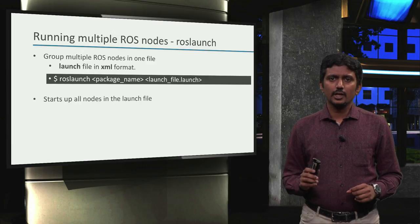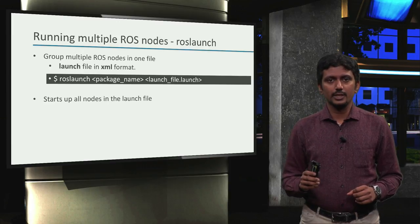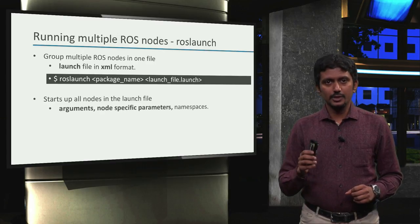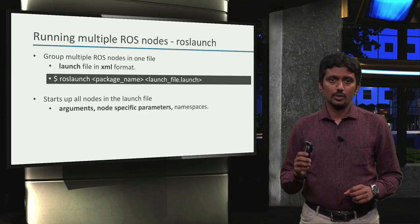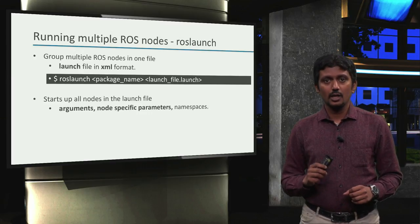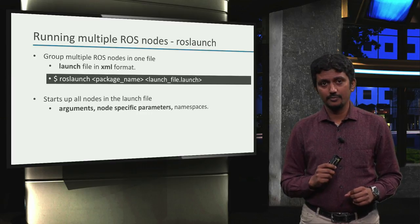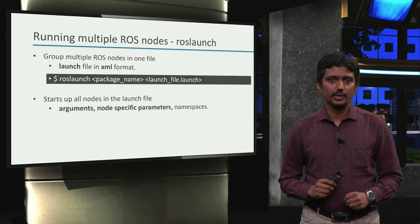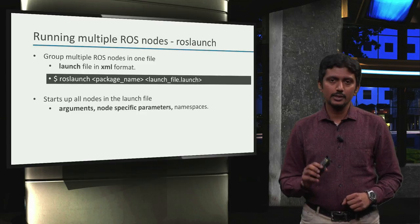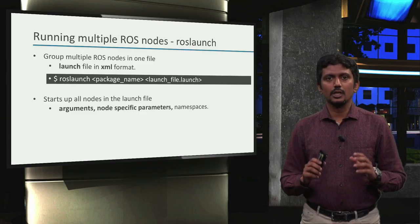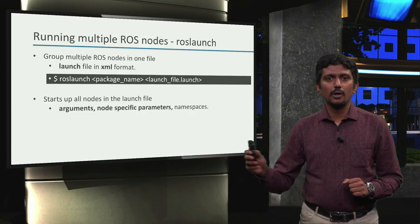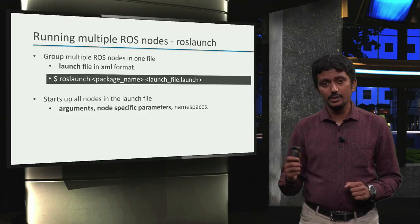And it also starts the ROSCore for us. So a launch file not only allows us to start up all nodes, but also provides a lot of possibilities. For example, it allows possibilities to pass arguments, node-specific parameters, and also namespaces. And those are not the only possibilities — we can do much more with launch files. But in this video, we will focus on the arguments and node-specific parameters, and we will learn more about launch files as we go along the course, whenever necessary.